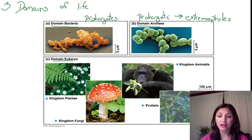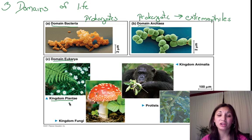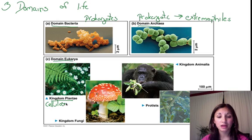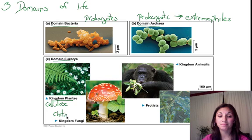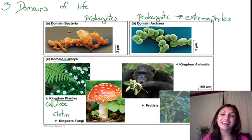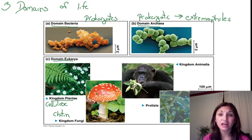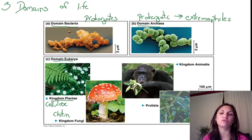Domain Eukarya contains what is left of that traditional five-kingdom system. In there we have Kingdom Plantae, including all plants, whose defining characteristic is the cellulose cell wall. Not to be confused with the defining characteristic of Kingdom Fungi, which is the chitinous cell wall. Kingdom Plantae is composed of autotrophs — things that can make and produce their own food — whereas Kingdom Fungi are all decomposers, heterotrophs that have to consume their food from other sources.